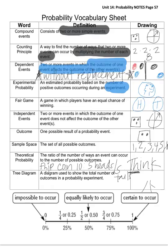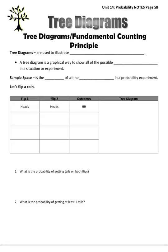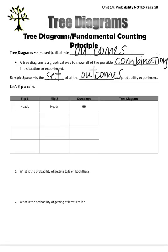That's theoretical tree diagram. Let's draw a tree. I'll explain what a tree diagram is in a few minutes. So tree diagrams are used to illustrate outcomes. A tree diagram is a graphical way to show all of the possible combinations in a situation or experiment. Sample space is the set of all of the outcomes in a probability experiment.